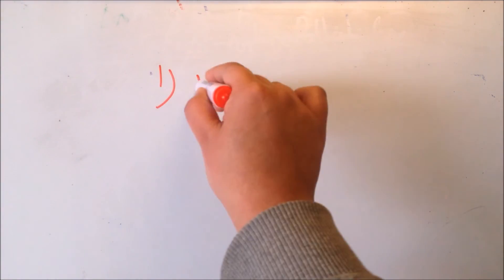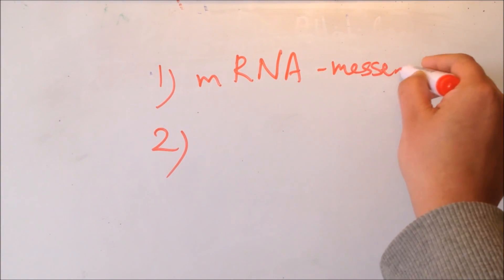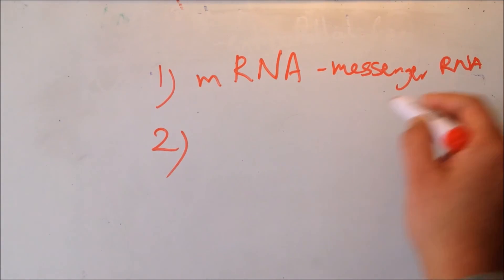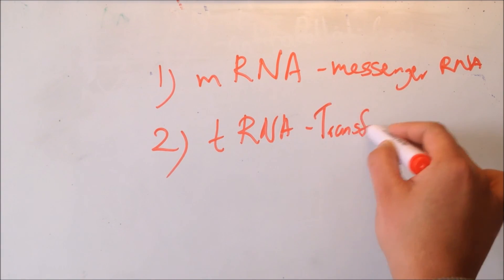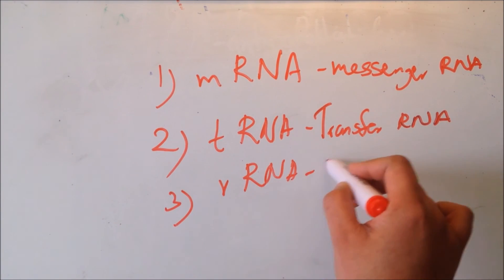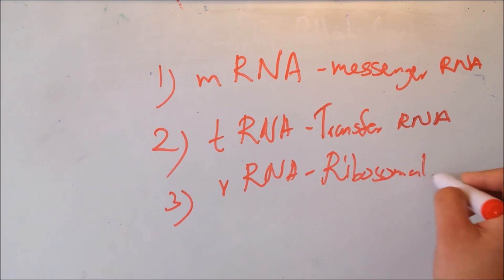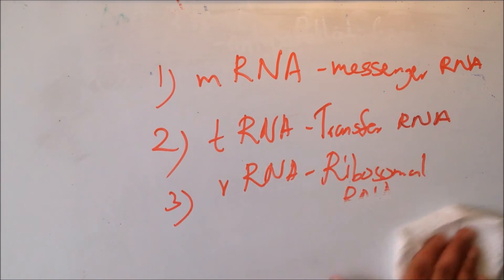There are three types of RNA: mRNA (messenger RNA), tRNA (transfer RNA), and rRNA (ribosomal RNA), which is a component of ribosomes. We'll learn about these three types of RNA in the next topic on protein synthesis in detail. Please like, subscribe, and share - thank you, bye!